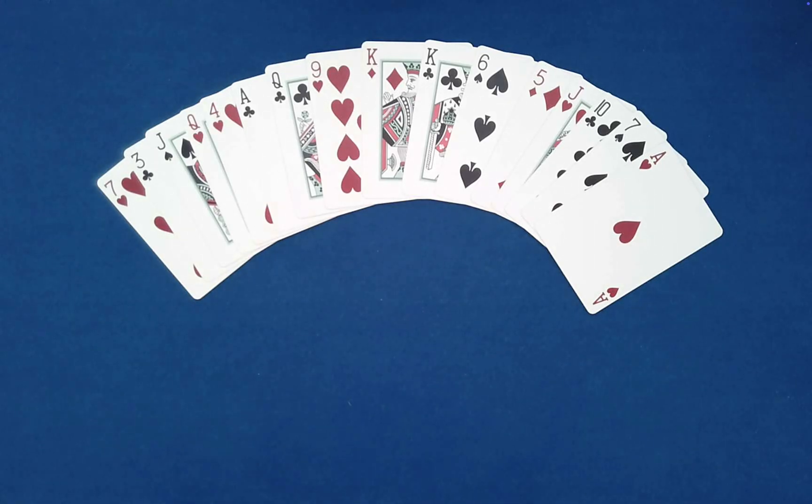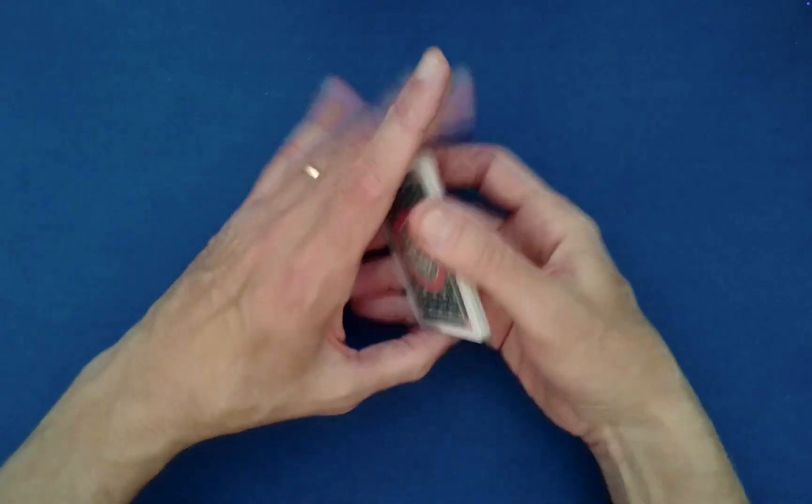As you can see, I have a good selection of cards on the table of different values, suits, and colors with face cards and number cards mixed in. I'll go ahead and gather these now since the two of us saw the cards.